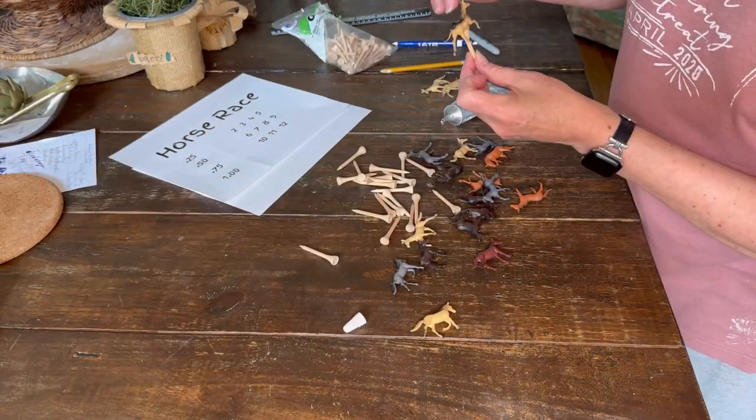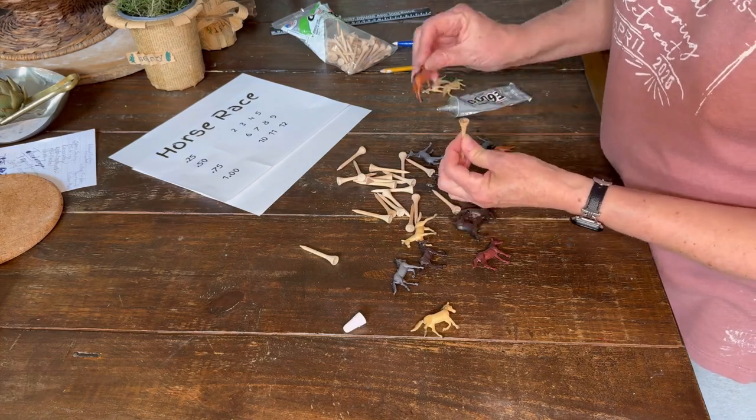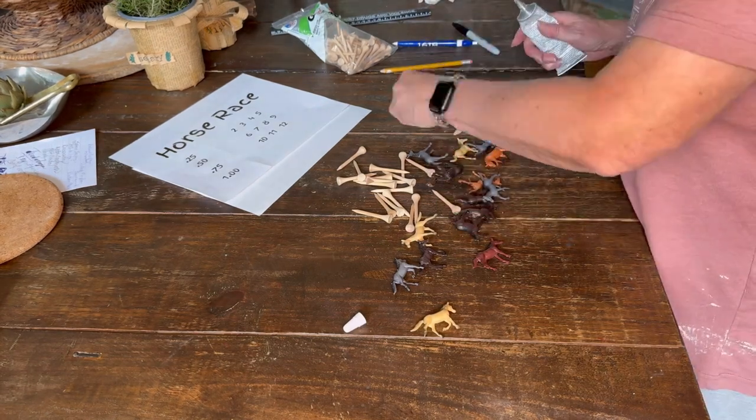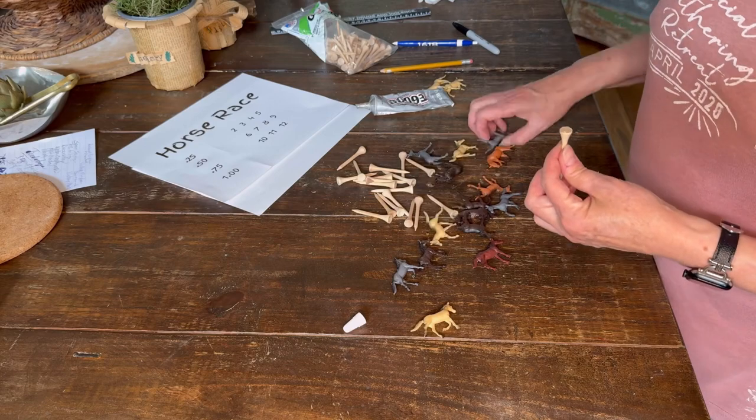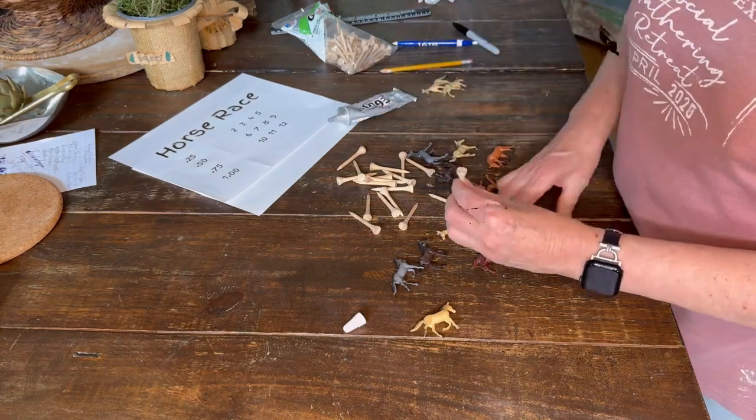Next, we're preparing our horses. These are just plain golf tees, and we're using some E6000 glue to glue these little mini plastic horses to the tops of them.